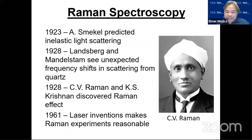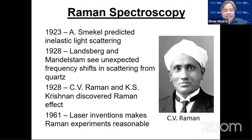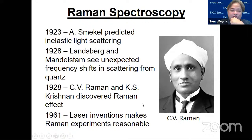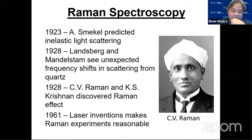As early as 1923, Smekal already predicted the existence of this inelastic light scattering. Then Landsberg and Mandelstam saw unexpected frequency shifts in scattering from quartz. In 1928, Chandrasekhara Venkata Raman and his student K.S. Krishna discovered the Raman effect. Raman was really confident that this scattering already existed, and it was just a matter of time before they discovered it. When he submitted the paper to Nature, one reviewer rejected it, but the editor accepted it. And in 1930, as early as July, he already booked a trip to Sweden because he expected to win the Nobel Prize in Physics, which he won later that year — the announcement came in November.